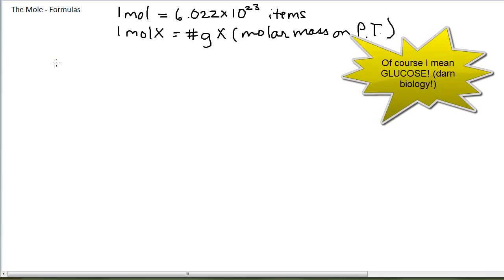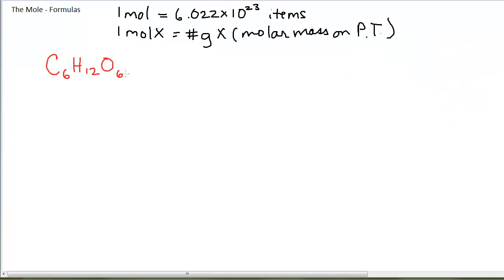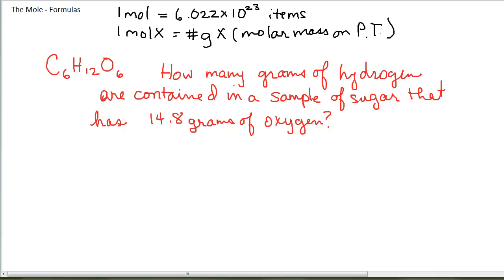Sugar, sucrose, is C6H12O6. Let's say we have a sample of sugar and we know how many grams of oxygen were used to produce that sugar, and we were interested in how many grams of hydrogen that would be.